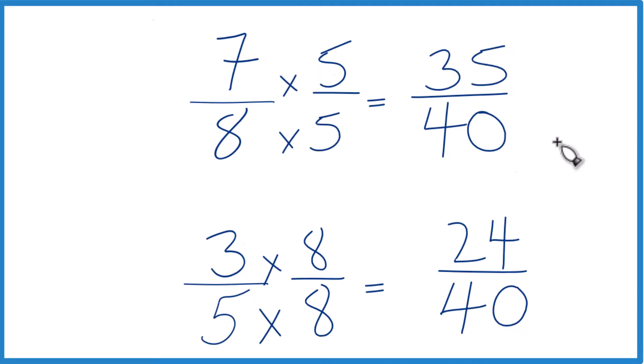And since we have the same denominator here, let's just compare the numerators. You can see 35 40ths, that's larger than 24 40ths. And remember, these fractions here and here are equivalent. They have the same value. So since this is larger than this, we can say 7 eighths, that's larger than 3 fifths.